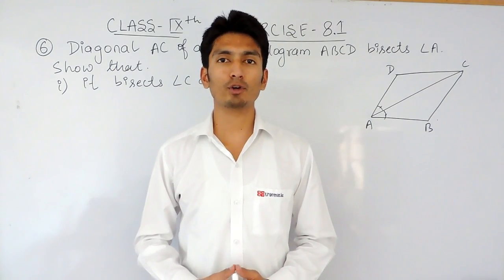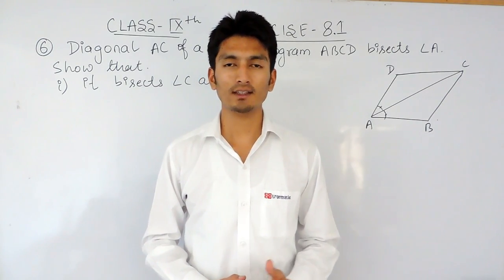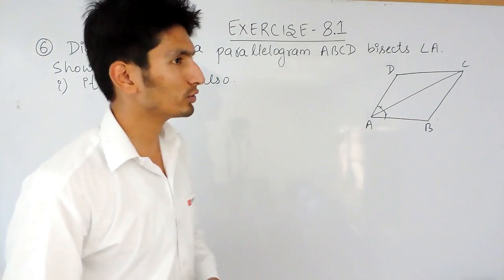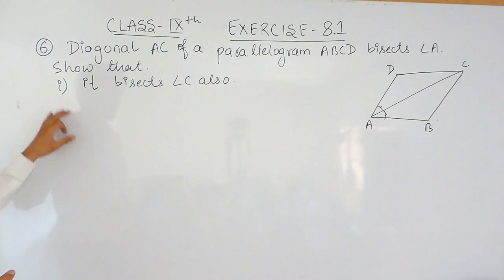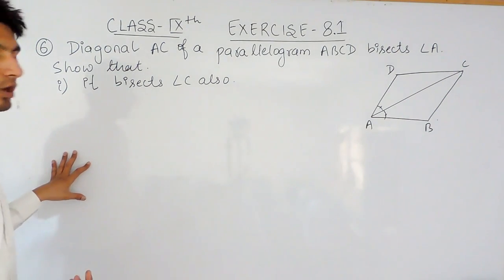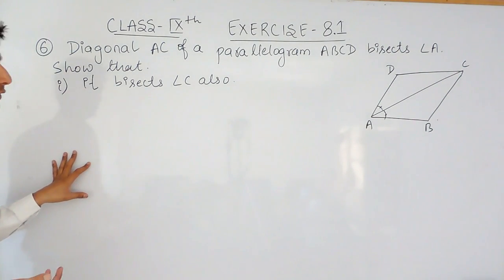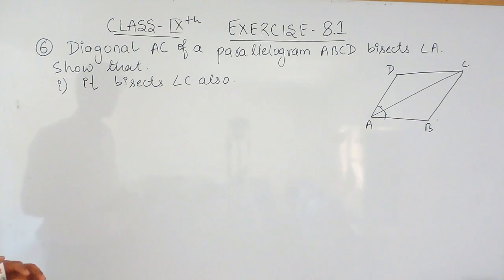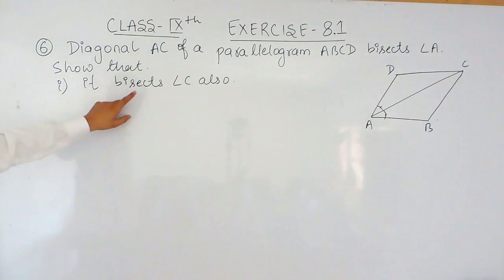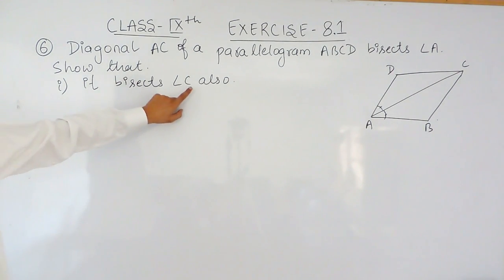Hello everyone, we are from TrueMaths and in this video we are going to solve the first part of question number 6. There are two parts in this question and the second part we will solve in the next video. It is given that diagonal AC of a parallelogram ABCD bisects angle A. We have to show that it also bisects angle C.